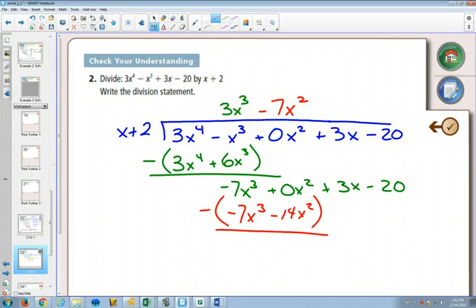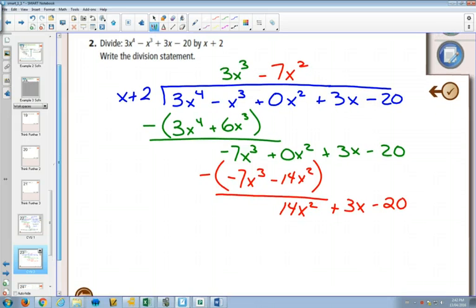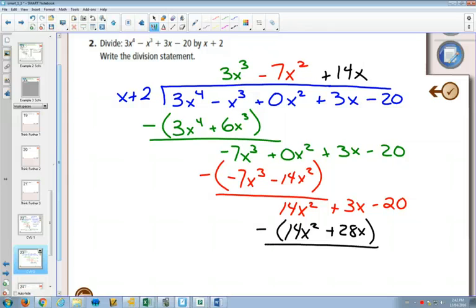negative 7 minus negative 7, that's 0. But 0 minus negative 14? 14x squared. And then bring the other ones down. Switch colors again. In order to get 14x squared, I need 14x. So every time you finish one number, you get a new number that's your large one. 14x times x will be 14x squared. 14x times 2 is plus 28x.